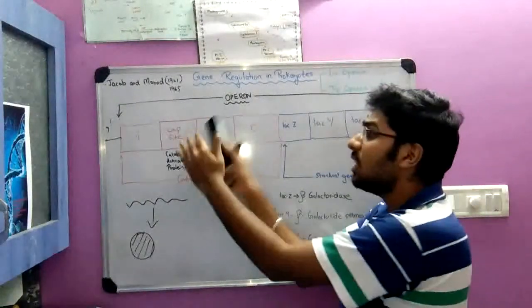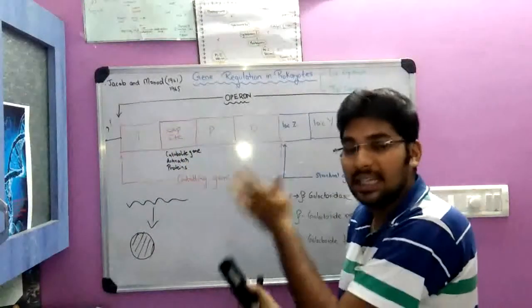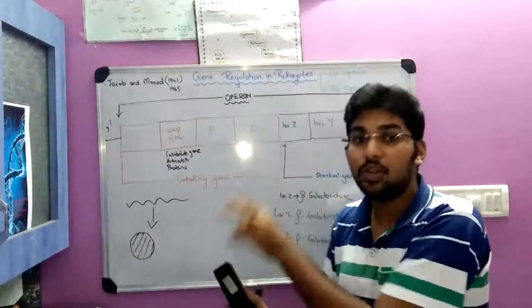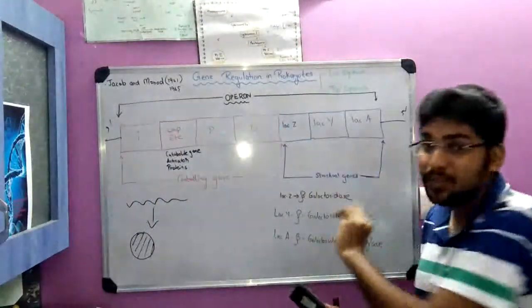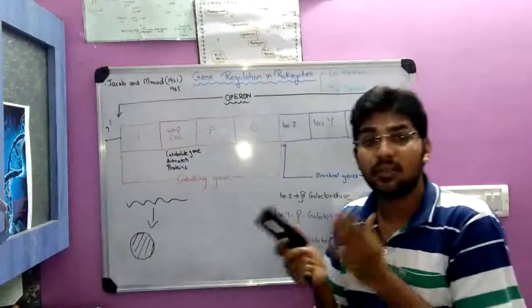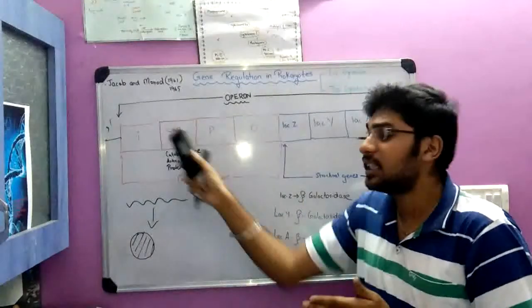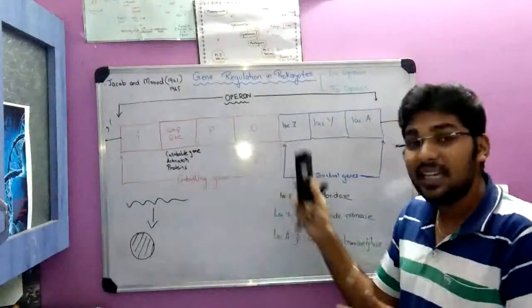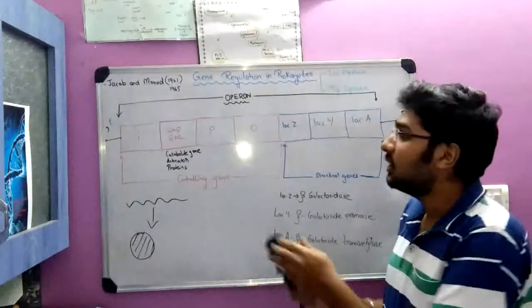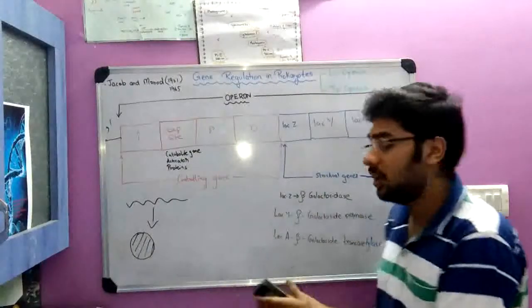This is the structure of the operon. If asked for two marks, you mention the names; if asked for five marks, you draw the structure and explain each function and each region.